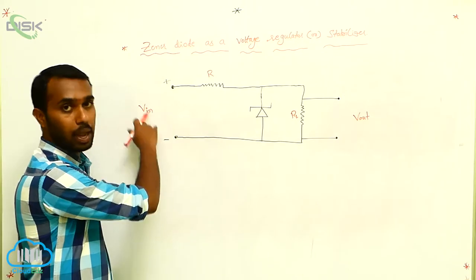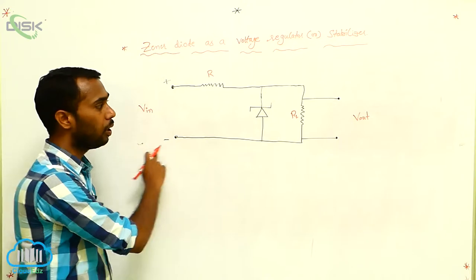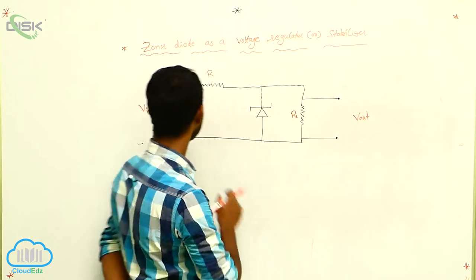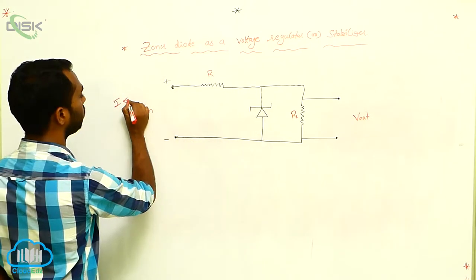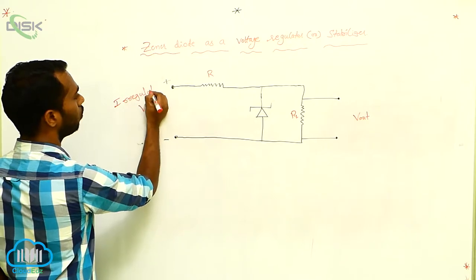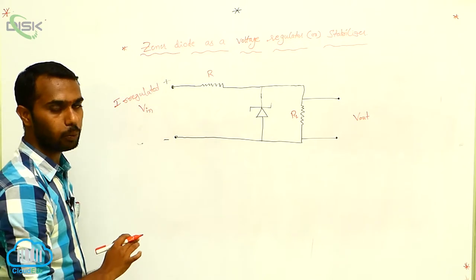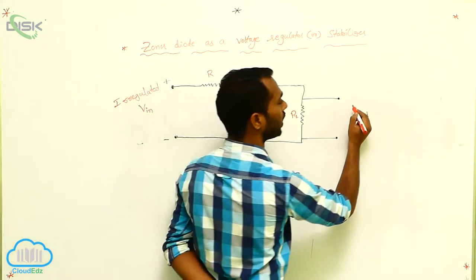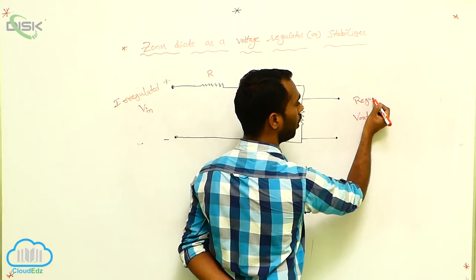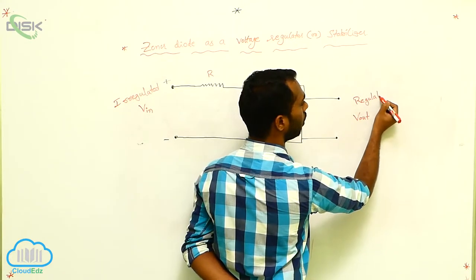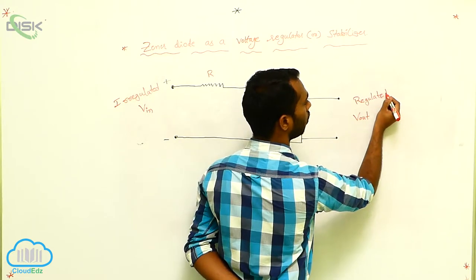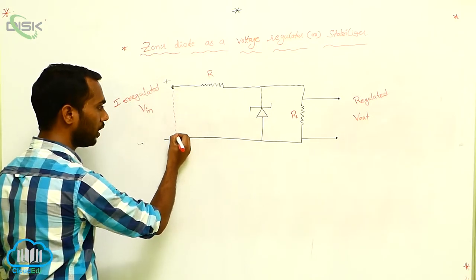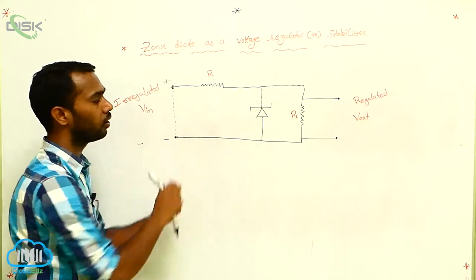Here also, if this input voltage increases or decreases, it always gives constant voltage. The input is irregulated — irregulated means changing continuously. And the output is regulated — regulated means maintaining constantly.